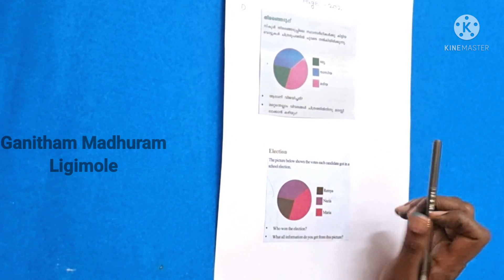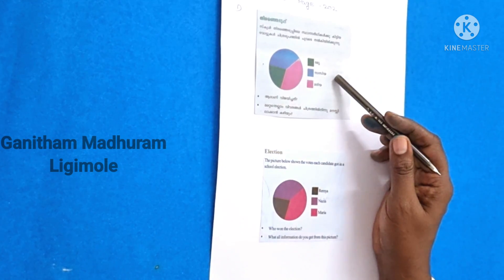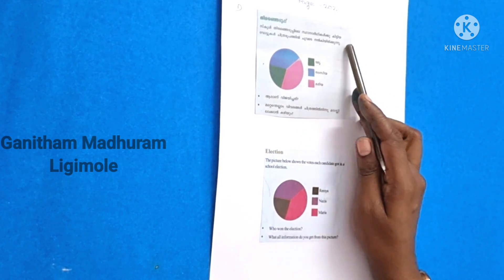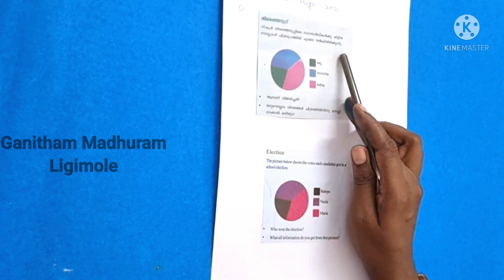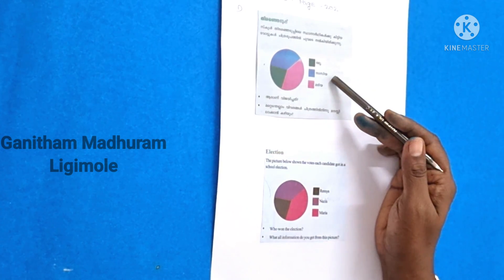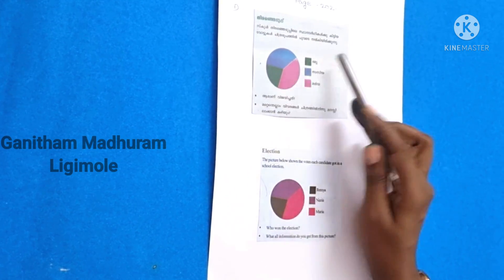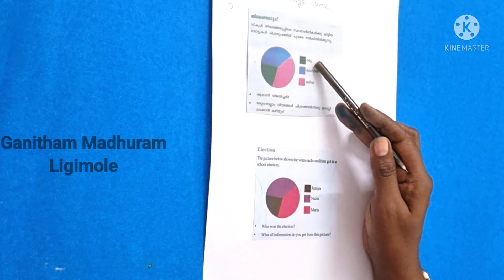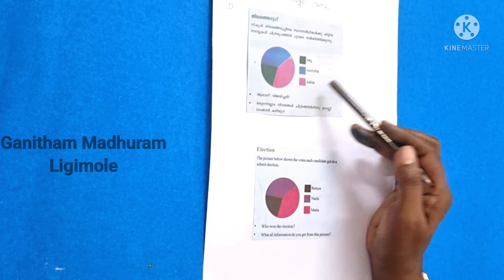Now let's see. In the text book, page number 222. The election. The picture shows what each candidate got in a school election. The green color is Remy, the blue color is Nasia, the pink color is Maria.